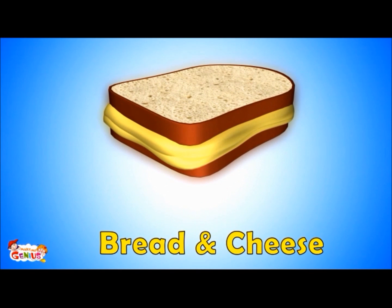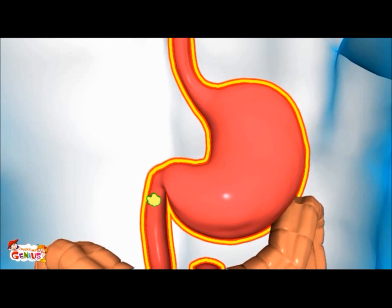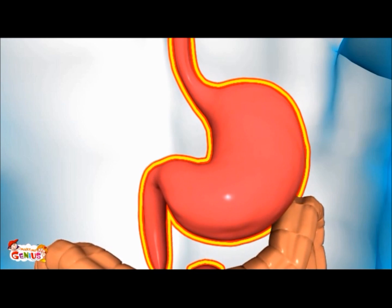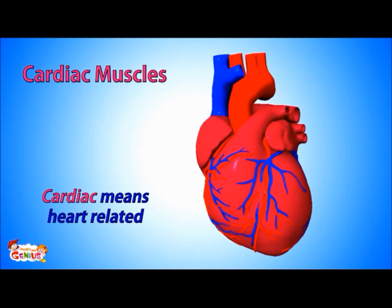Smooth muscles are found in between the outer covering and the inner lining, so they are sandwiched between two walls of these organs. Imagine one bread slice to be the outer covering of your stomach and the other slice as the inner lining — the cheese inside represents the smooth muscles. Smooth muscles in the wall of the stomach and intestines help push food down into your digestive system. Similarly, smooth muscles form the sphincter, which along with your bladder helps to control your pee.